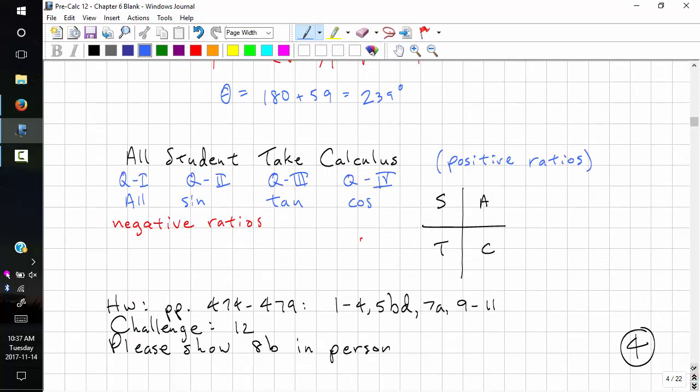We have trig ratios that are positive and negative now. You need to know whether the trig ratios are positive or negative in each of the quadrants. The best way to remember this is with all students take calculus. This lists the positive ratios. They're all positive in quadrant 1. Only sine is positive in quadrant 2.